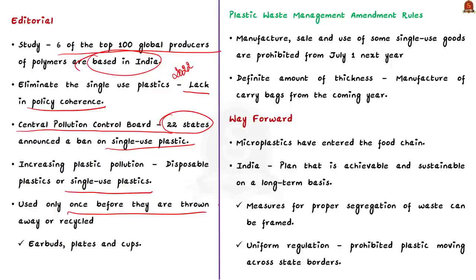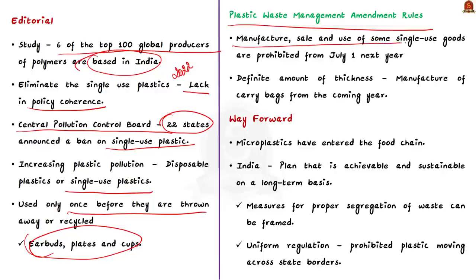We are facing increasing plastic pollution, especially from disposable or single-use plastics — items used only once before they are thrown away or recycled, such as earbuds, plates and cups. In order to tackle this growing situation, the centre has come up with the Plastic Waste Management Amendment Rules. Under the new rules, the manufacture, sale and use of some single-use goods are prohibited from July 1 next year. A definite amount of thickness is also expected in the manufacture of carry-bags from the coming years. Microplastics have now entered the food chain, highlighting the need for the government to act to stop its rise.